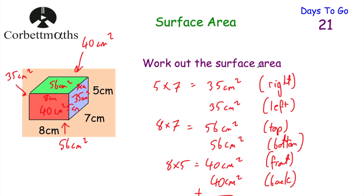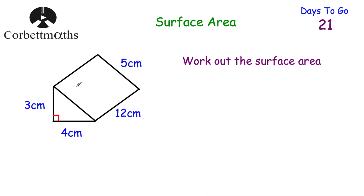We've had a look at how to find the surface area of cuboids — finding the area of all six faces and adding them up. Let's have a look at another prism. Here we've got a triangular prism, and as you can see it's a right angle triangle. We've been asked to work out the surface area of this triangular prism, so we're going to need to find the area of all five faces.